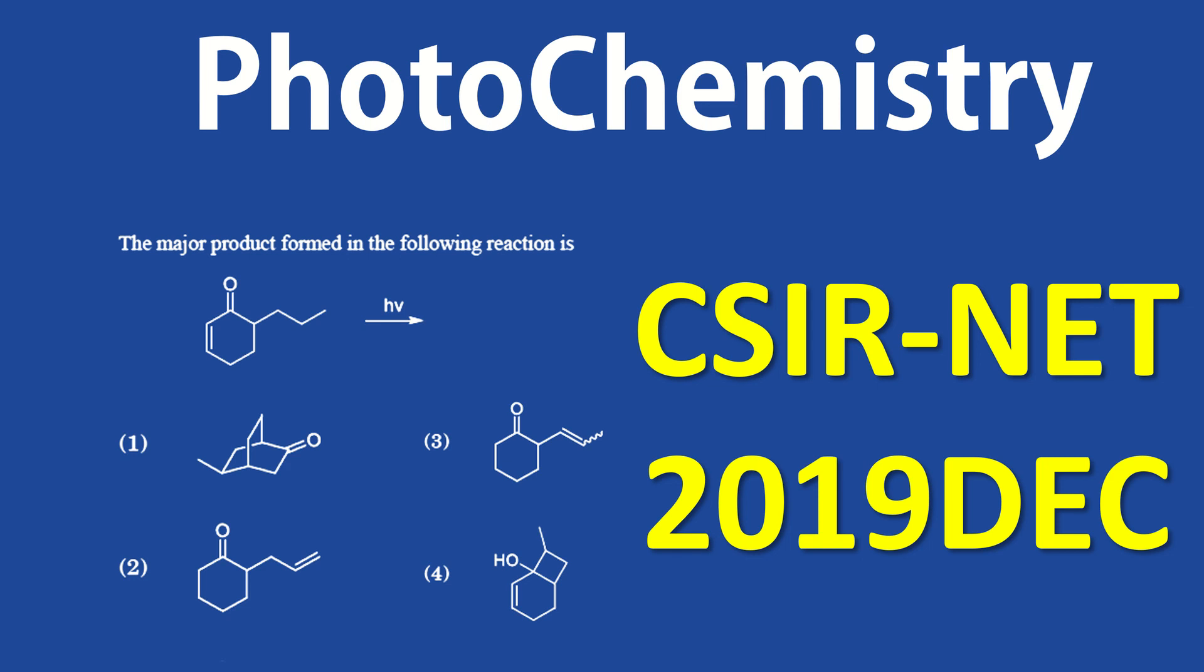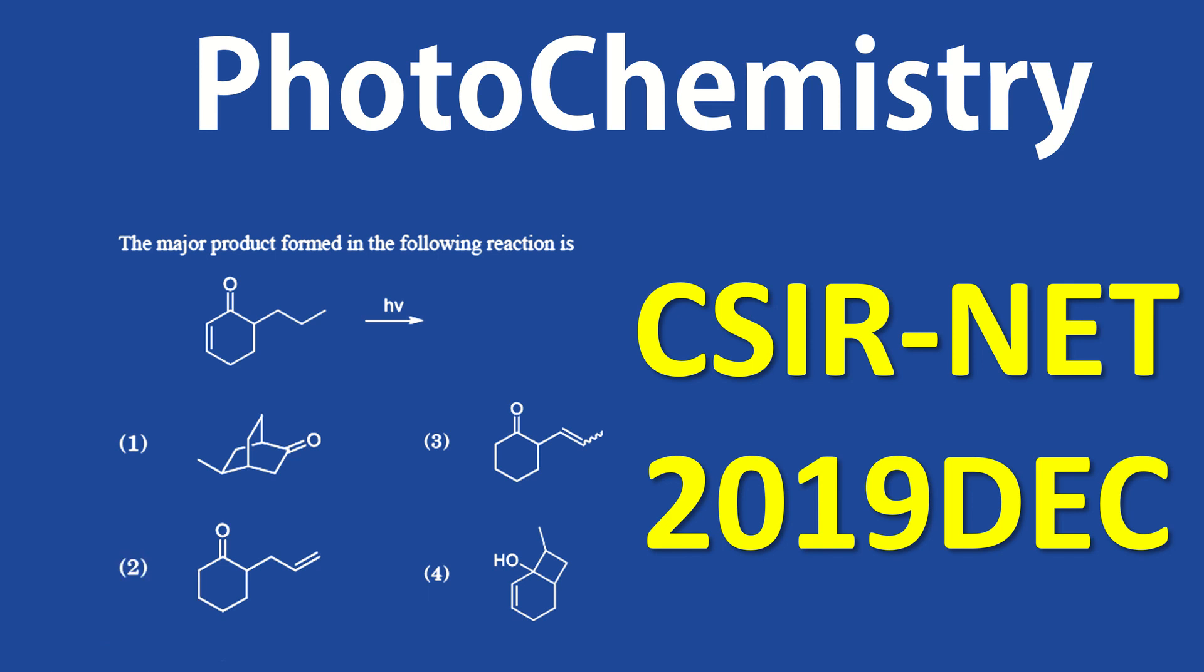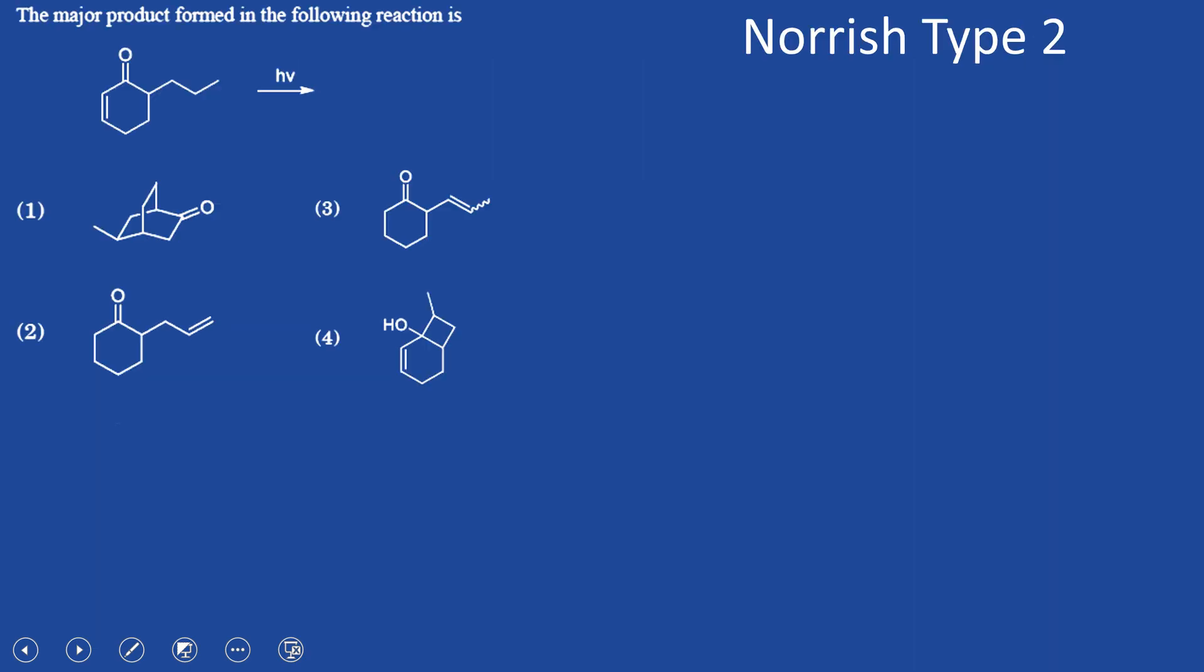Hello guys, welcome back to EPI Chemistry. Today we are going to look at a question based on photochemistry from CSIR NET exam 2019 December. The major product formed in the following reaction is, as you can see here, a Norrish Type 2 reaction. Here there is HMU, indicating this is a photochemical reaction which is the famous Norrish Type 2 reaction.